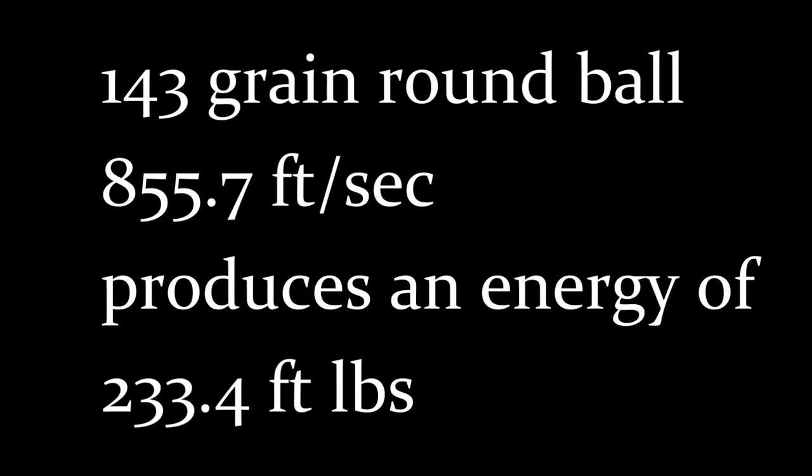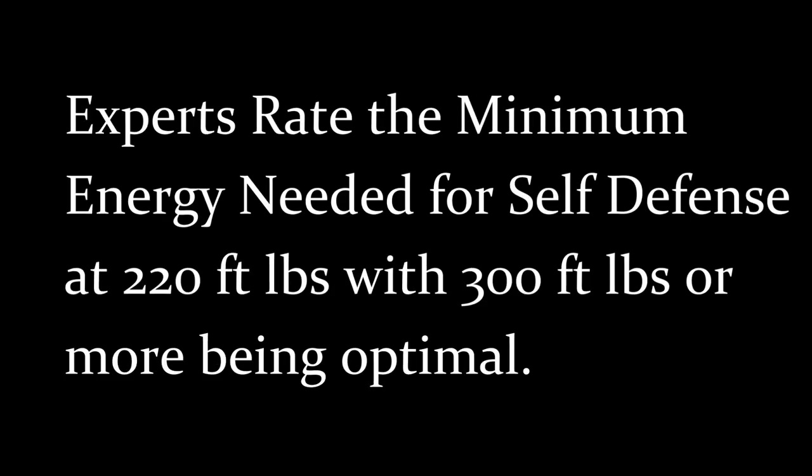A 143 grain round ball traveling at 855 feet per second is going to produce an energy of 233.4 foot pounds. Self-defense experts will tell us you need a minimum of about 220 foot pounds of energy, over 300 foot pounds even better, to have an adequate self-defense round. So the round ball in the 1860 Army revolver is within that zone, but barely. It's effective but at the low end.